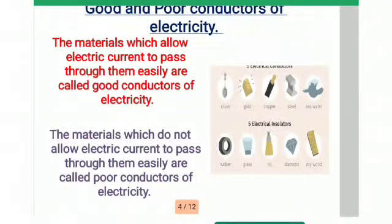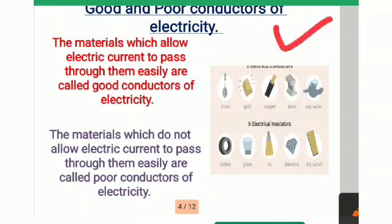Good morning students. Today we are covering a topic from the chapter 'Chemical Effects of Electric Current', Class 8 Science. In this chapter we are studying about electric current. First of all, we should know what is an electric current — it is simply the flow of charges. Here we are studying the first topic: good and poor conductors of electricity.